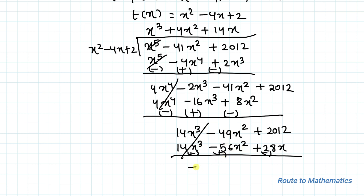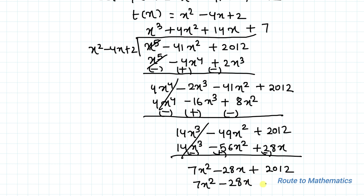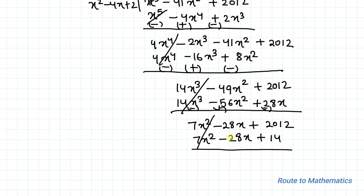We now have 7x² - 28x + 2012. Adding 7 to the quotient gives 7x² - 28x + 14. These two sets of terms cancel out as well. So the remainder is 2012 - 14 = 1998.